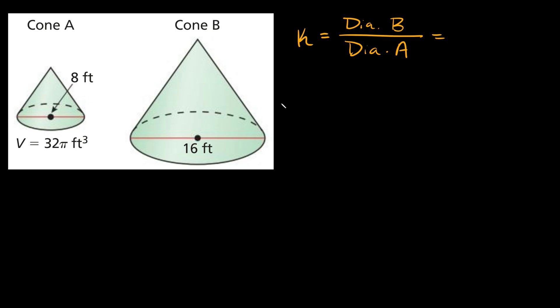So what is the diameter of B? Well it's 16. So we'll put a 16 there. And what is the diameter of A? Well that's 8. Alright, 16 divided by 8 is equal to 2. So our scale factor k is equal to 2.